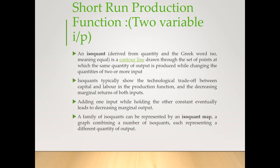This kind of relationship we would be able to explain with the help of an isoquant. Isoquant is derived from quantity and the Greek word 'iso' meaning equal — iso means equal, quant means quantity. Equal quantity is a contoured line drawn through the set of points at which the same quantity of output is produced while changing the quantities of two or more inputs.